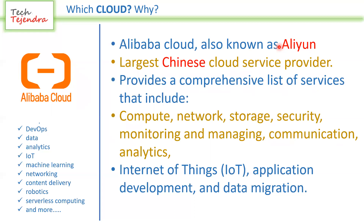Alibaba Cloud is also a very large cloud similar to Google and others, with a service list comparable to AWS and GCP. The main difference is that Alibaba's popularity is primarily within China — it is not as well known globally. It is also known as Aliyun, and its services include Internet of Things, compute, analytics, and everything else that major cloud providers offer.